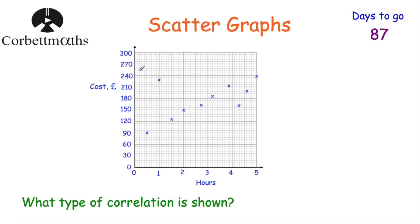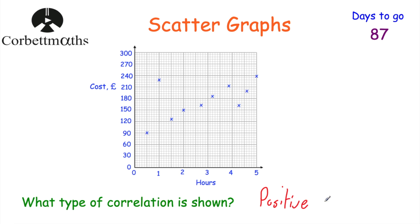Going back to our plumbing jobs question, it asks: what type of correlation is shown? As you can see, this is positive correlation — as the length of the job goes up, the cost increases as well. So the answer is positive correlation.